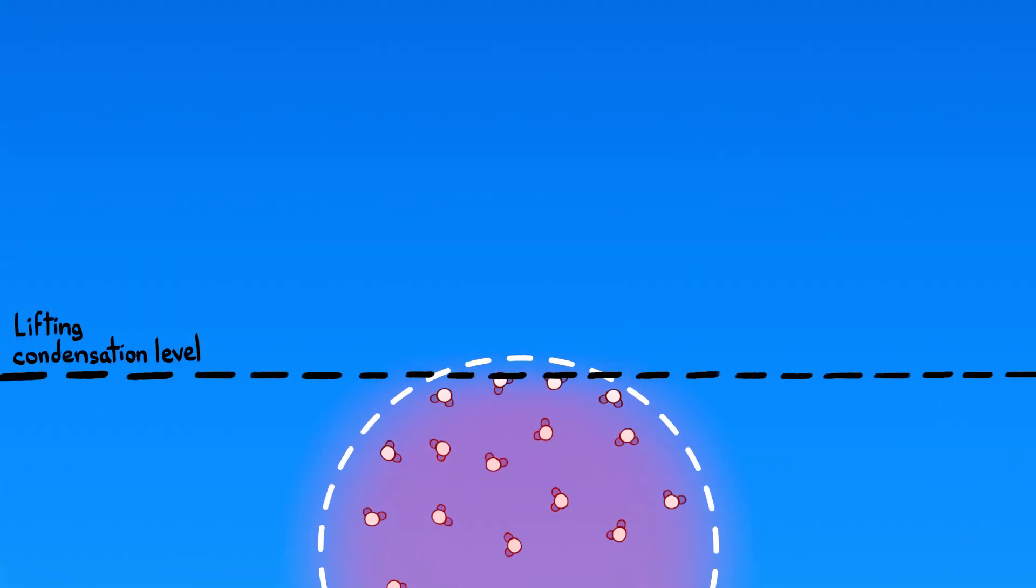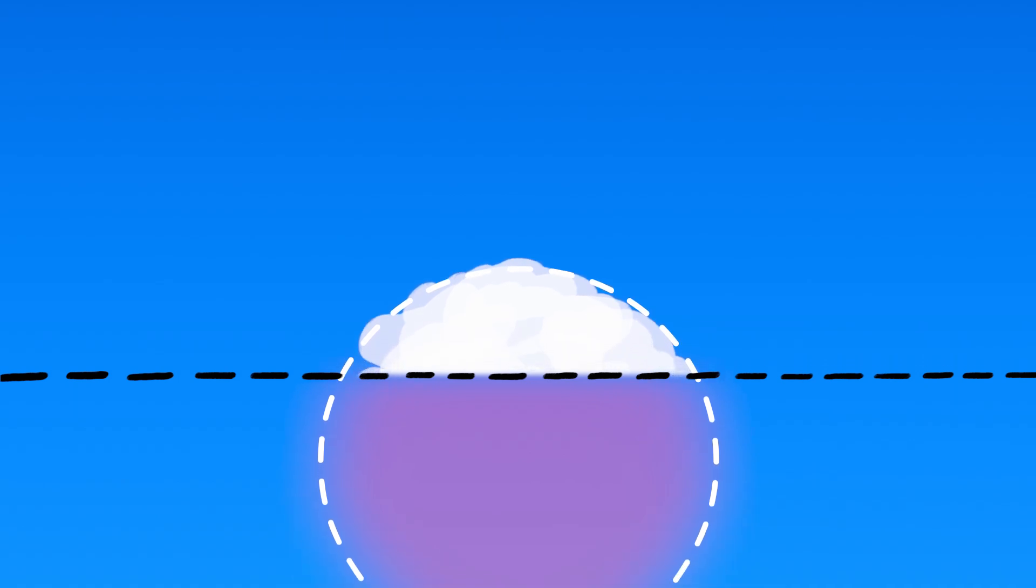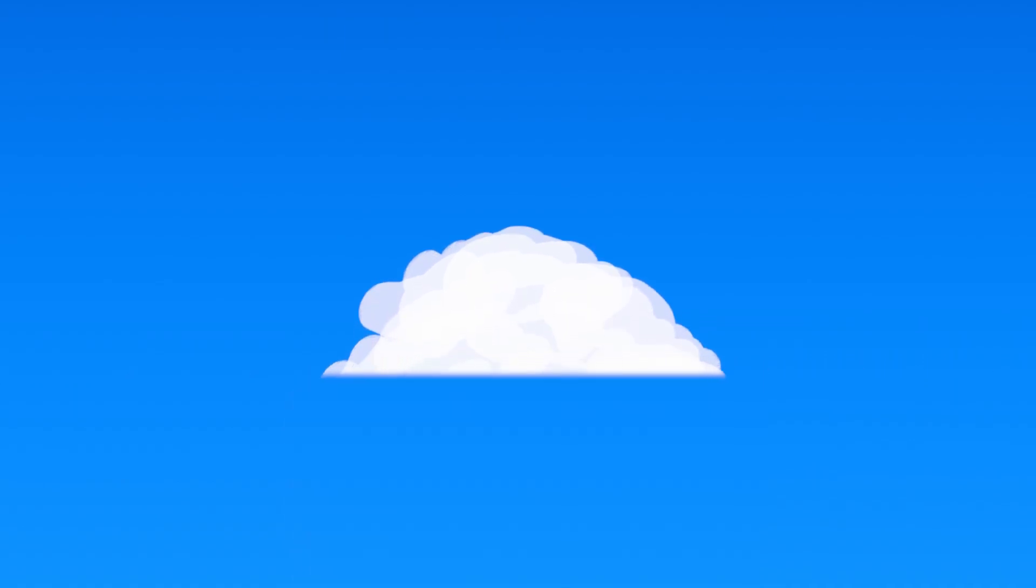Eventually, the air at the top cools enough for the water vapor there to condense into droplets, which look from afar like a thin wisp of cloud. And as the rest of the balloon rises, water vapor continues to cool and condense at the same altitude, creating a flat-bottomed cloud that appears to grow upward out of nothing.